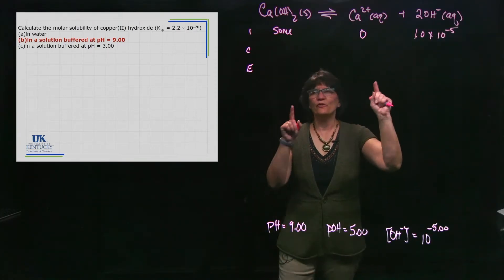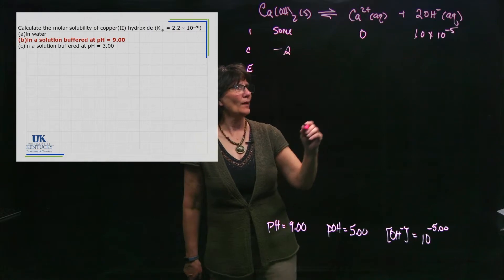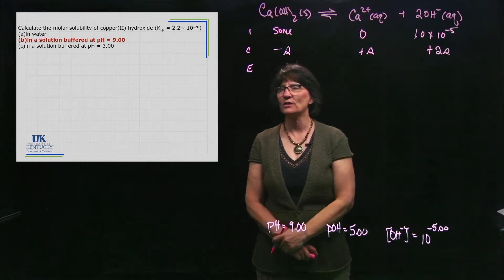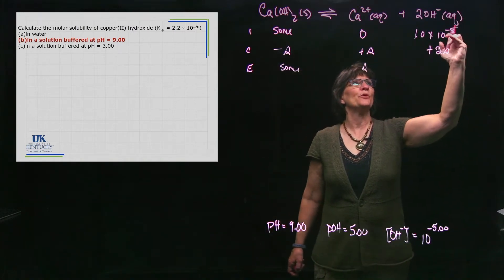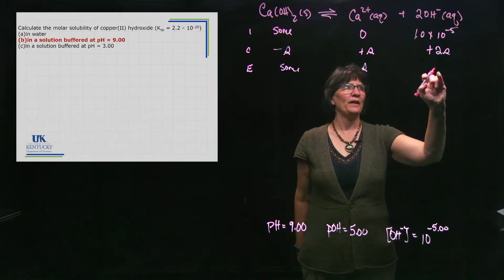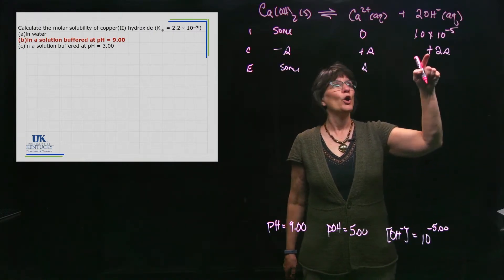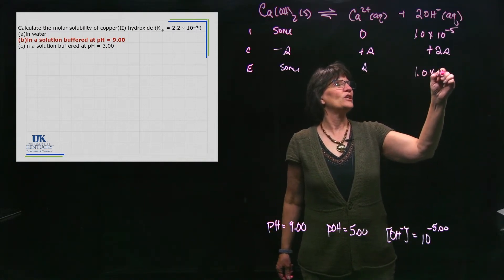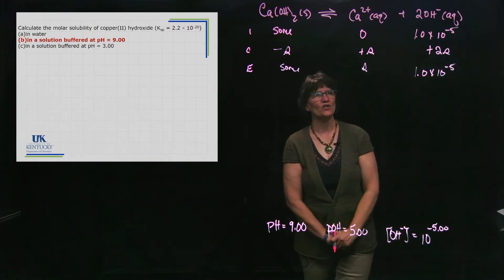I'm buffering it to that concentration. Some of the solid dissolves, so that's minus s, and I produce s of calcium and 2s of hydroxide because of that coefficient of 2. We might be tempted to put 1.0 × 10⁻⁵ plus 2s for hydroxide, but the solution is buffered to pH 9. Buffers resist change — even though we're adding hydroxide, the buffer neutralizes it and keeps the pH constant.